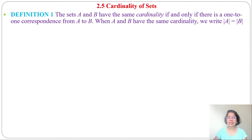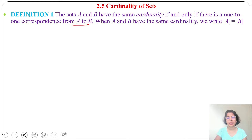Definition 1: Sets A and B have the same cardinality if and only if there is a one-to-one correspondence from A to B. When A and B have the same cardinality, we write it as the cardinality of A equals the cardinality of B.